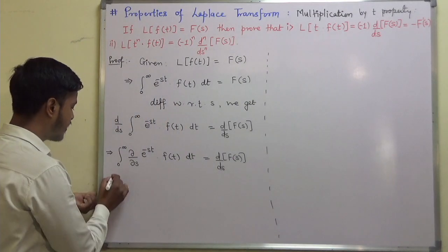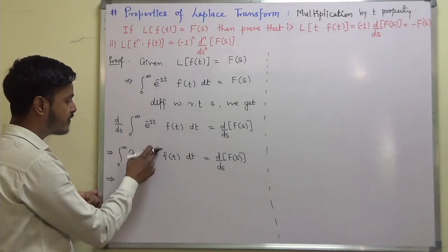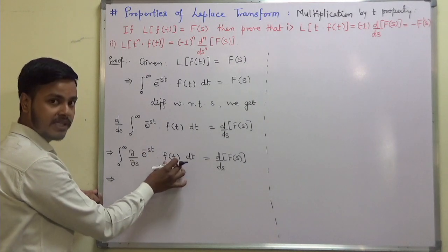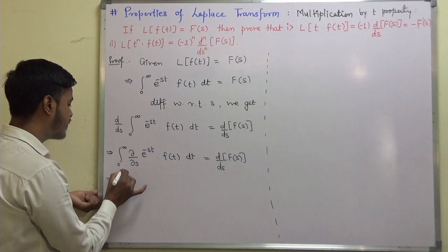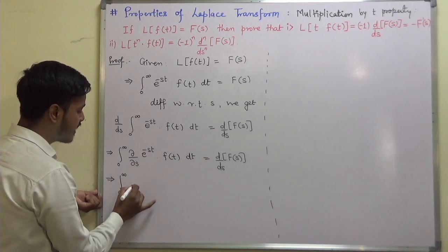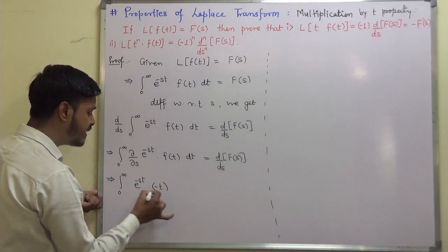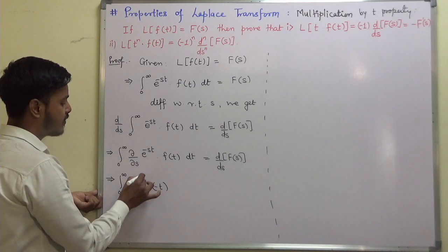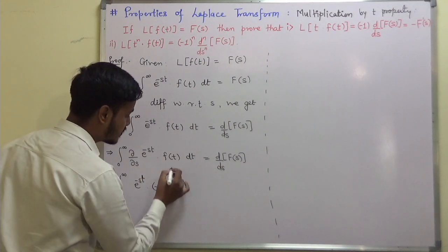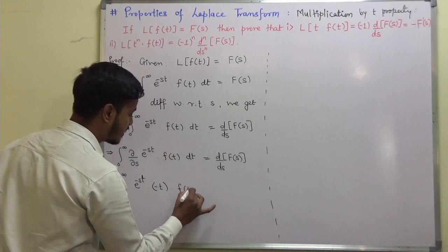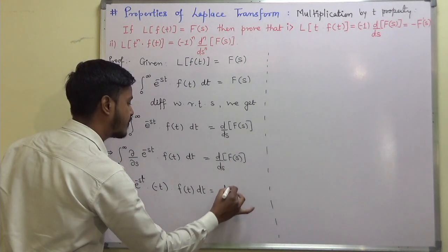Since we are differentiating with respect to s, t is treated as a constant. The derivative of e^(-st) with respect to s is e^(-st) · (-t). So we get the integral from 0 to infinity of e^(-st) · (-t) · f(t) dt equals d/ds of F(s).